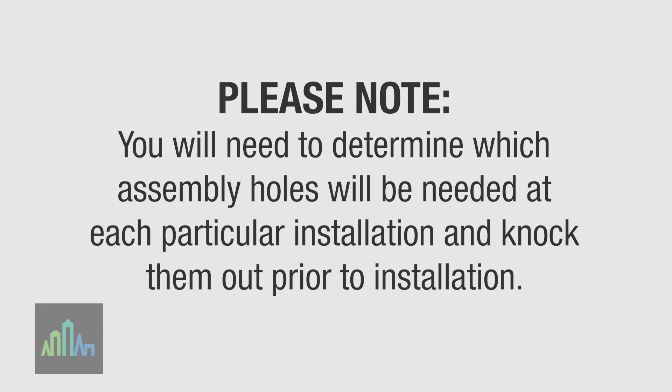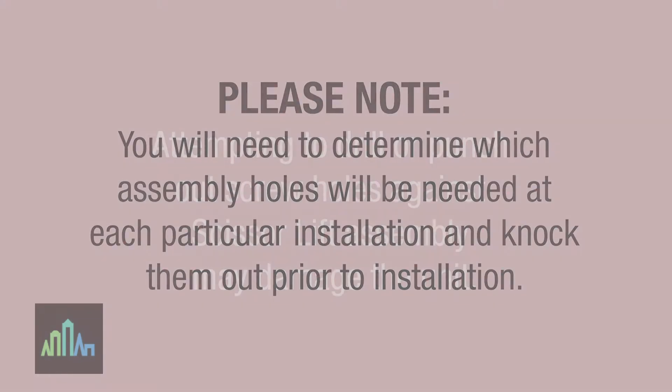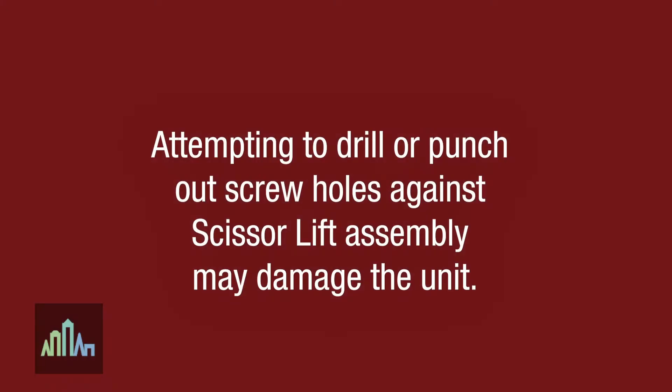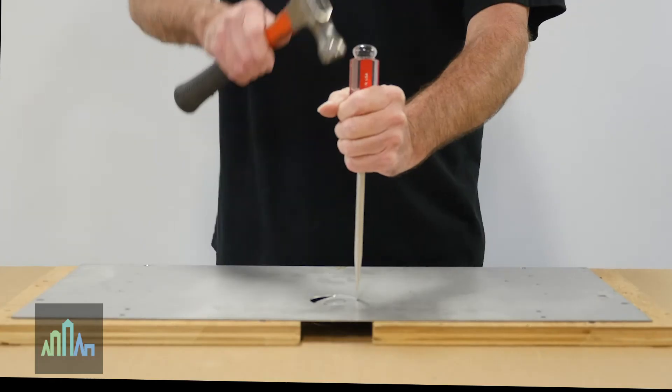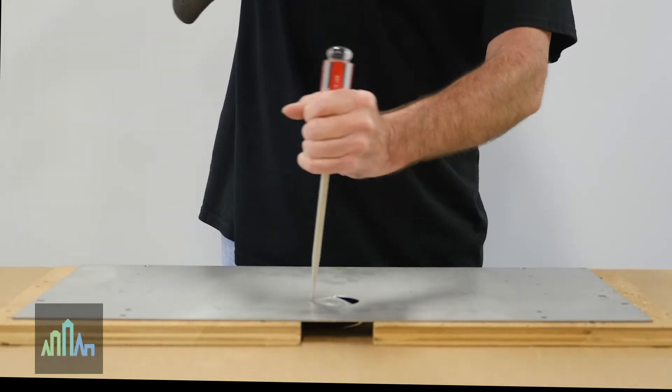Please note, you will need to determine which assembly holes will be needed at each particular installation and knock them out prior to installation. Attempting to drill or punch out screw holes against the ScissorLift assembly may damage the unit. Additionally, you will need to punch out the access ports for power and data cables.